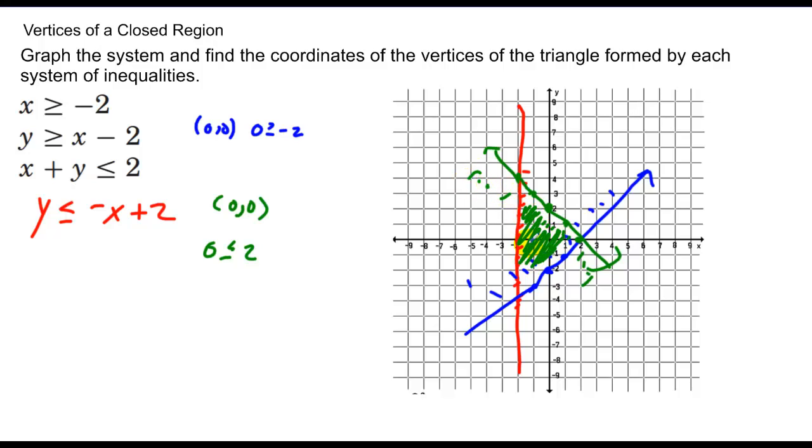Now sometimes you're going to be very lucky and you'll end up in graphing such that you can see the vertices of this closed region. In this case, you'll notice there's one at 2, 4, which is right here. There's another one at 2, 0, which is right here. And our last one is at negative 2, negative 4. And those are the vertices of our closed region.